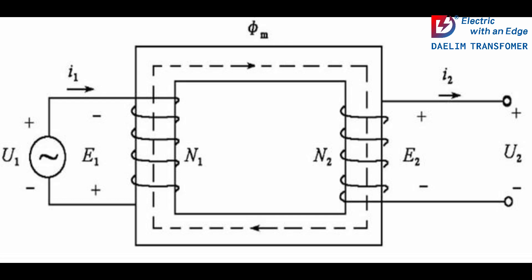So what does transformer impedance mean? Simply put, it's the inherent opposition to the flow of alternating current within a transformer affecting its voltage regulation and fault current characteristics.